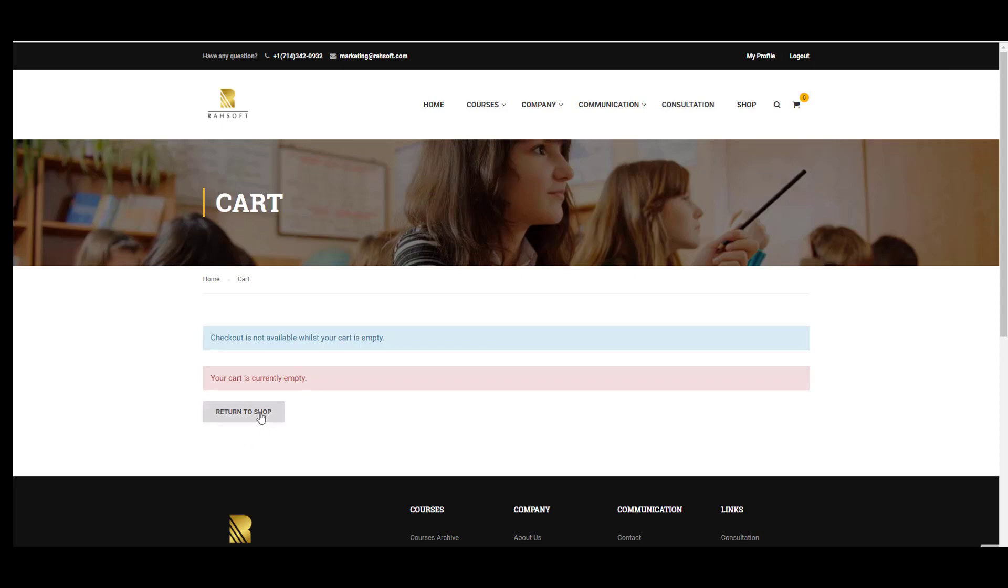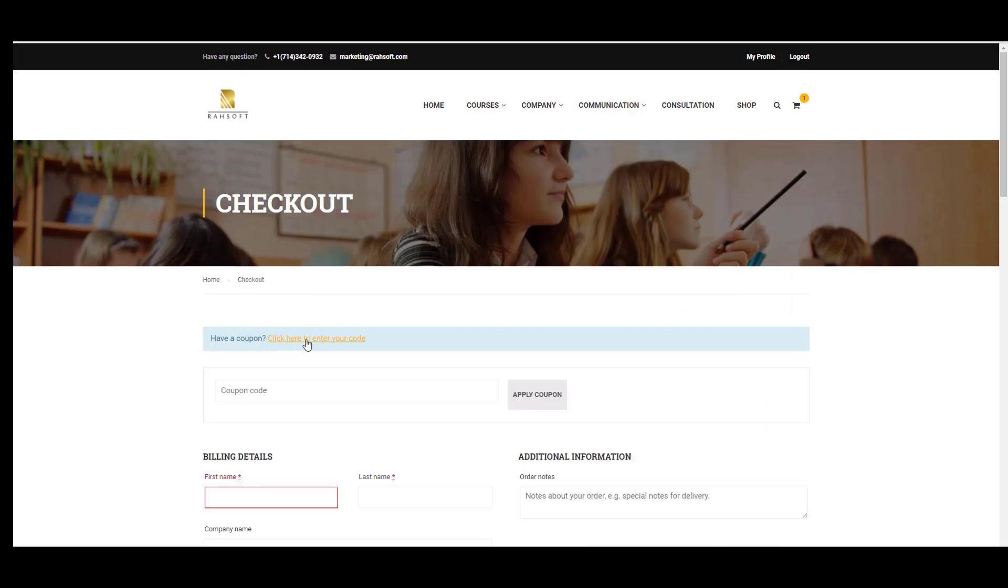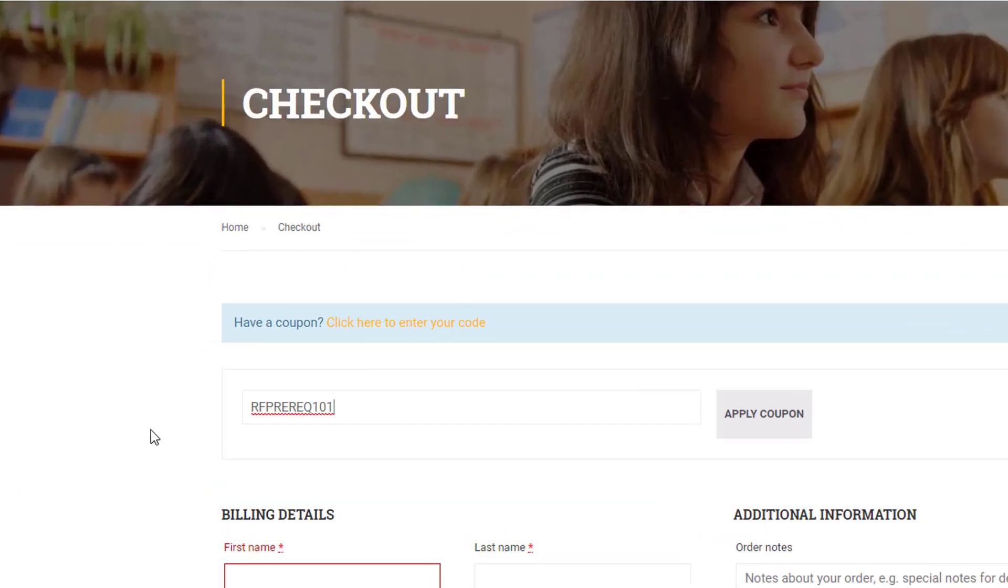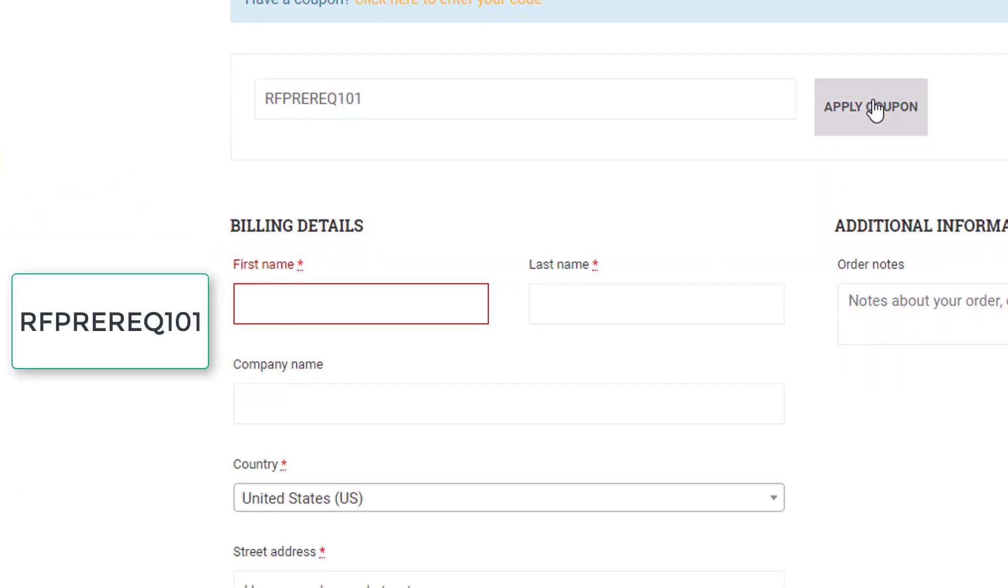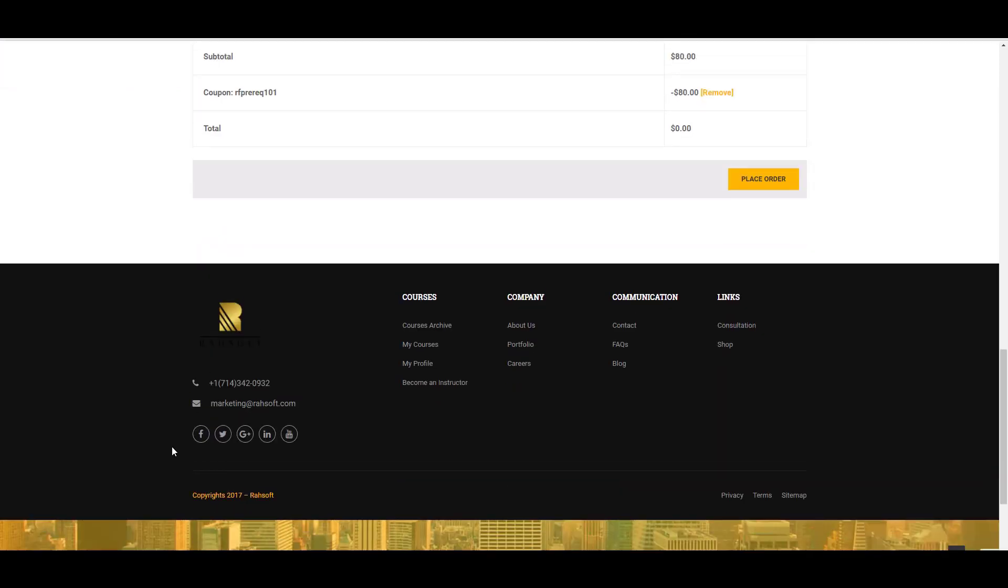And after that, all you need to do is going to the course landing page and go to checkout. And as you see, click to enter your code. You can put the coupon code here and then apply the coupon. Then you will have this course for free and you can take this course.